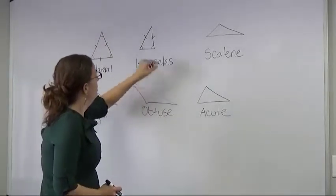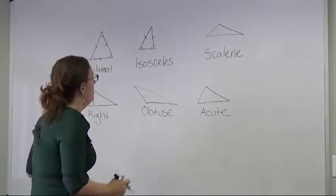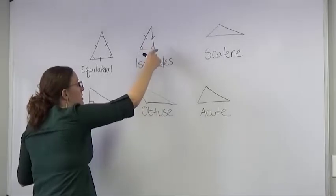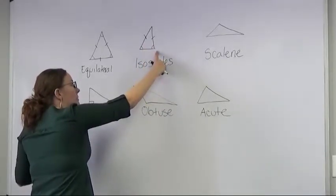With an isosceles triangle, only two sides are going to be congruent or equal to each other, and only two angles are going to be equal to each other. So that makes it isosceles. The last side will be a different length.